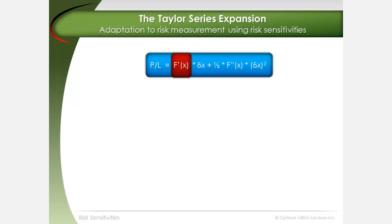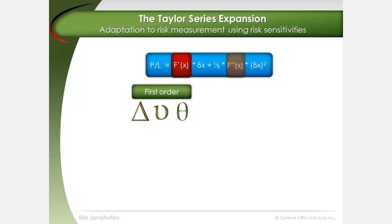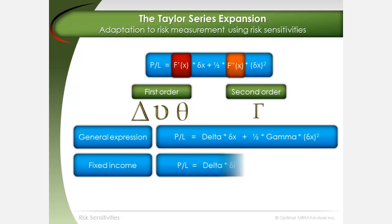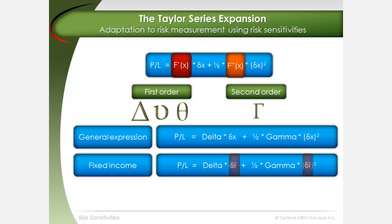F prime of x refers to the first order derivatives such as delta, vega, and theta, and F double prime of x refers to second order derivatives such as gamma. For fixed income investments, the profit or loss is equal to delta times the change in interest rates, where delta is expressed in basis points, plus one-half times gamma times the change in interest rates squared.